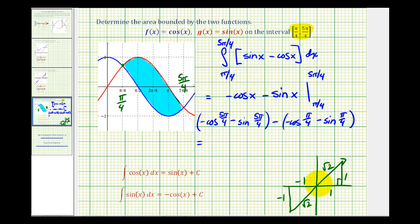So cosine five pi over four would be negative one over square root two or negative square root two over two, but we do have a negative here, so it's going to be positive square root two over two minus sine five pi over four is going to be negative square root two over two as well.